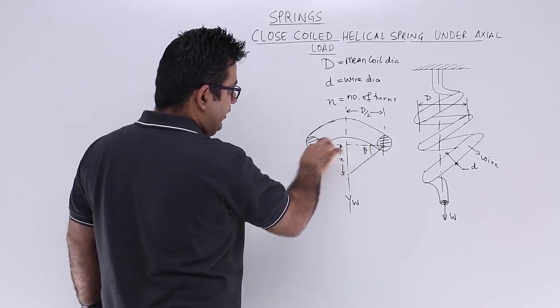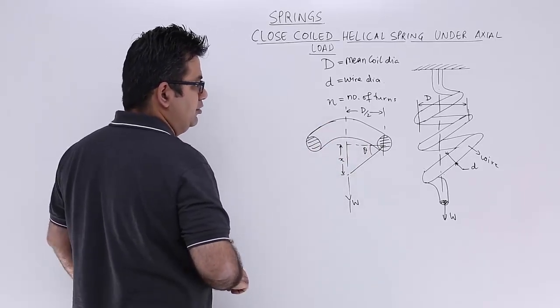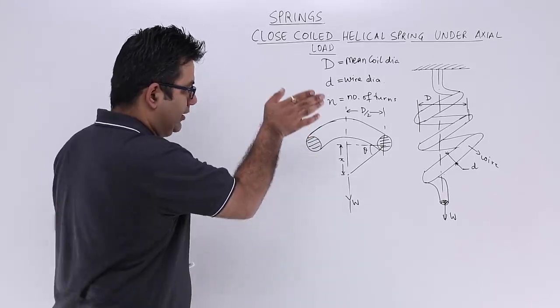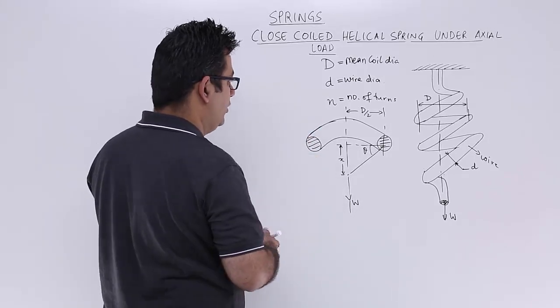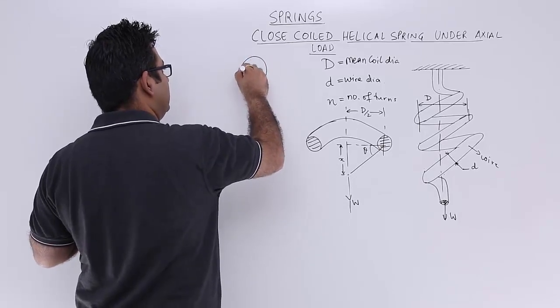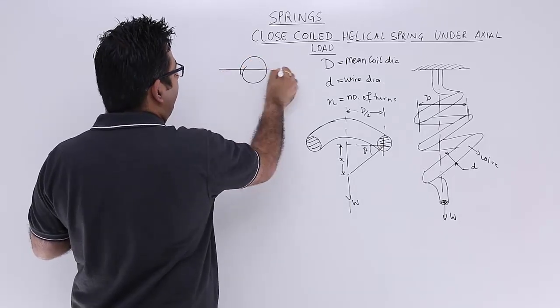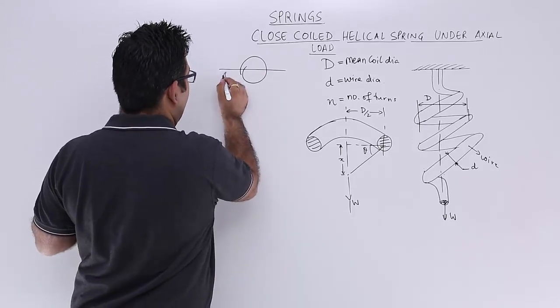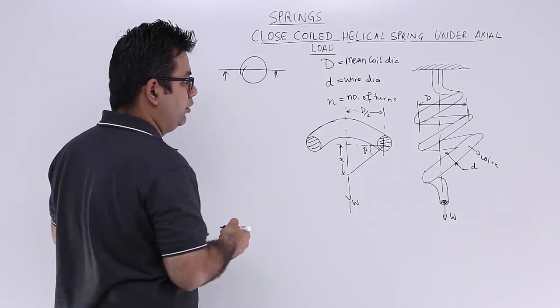If you look at this particular cross section over here, so this is nothing but one cut section of a coil. If you look from the top, a coil will be nothing like this. This is the coil. So when you cut it from here and you have a look over here, this is what you're going to see.